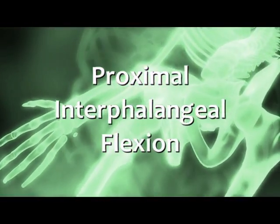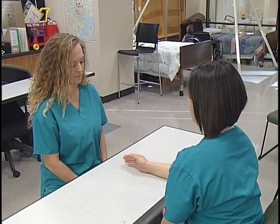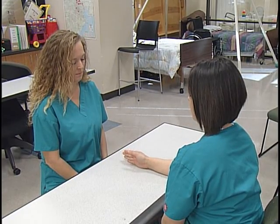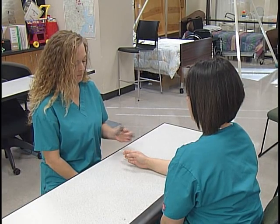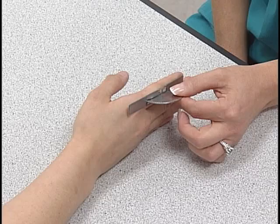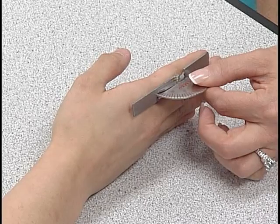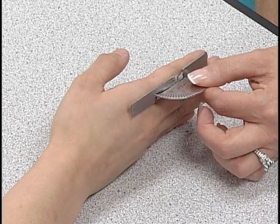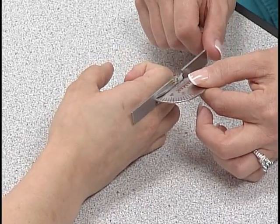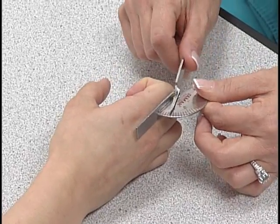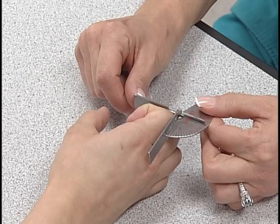For proximal interphalangeal flexion, the subject is seated with the forearm in mid position, wrist at zero degrees neutral, and the forearm and hand supported on a firm surface on the ulnar border. The axis of the goniometer is centered on the dorsal surface of the PIP joint being measured. The stationary bar is placed over the proximal phalanx and the movable bar is over the middle phalanx. The client's finger distal of the PIP joint is flexed down in a sagittal plane of movement. The measurement begins at zero degrees and can range up to 110 degrees.